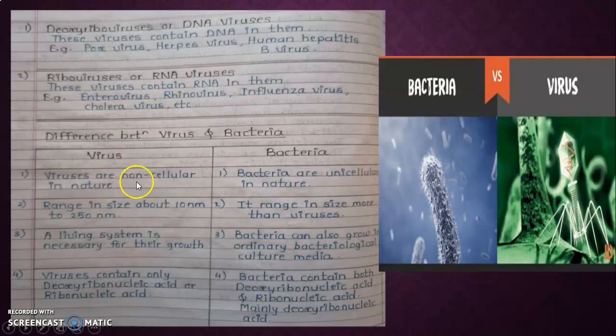Difference between virus and bacteria: viruses are non-cellular, bacteria are unicellular in nature. Viruses range in size about 10 nanometer to 50 nanometer, bacteria range in size more than viruses. A living system is necessary for virus growth, but bacteria can also grow in ordinary bacteriological culture media. Viruses contain only DNA or RNA, bacteria contain both DNA and RNA, mainly DNA.